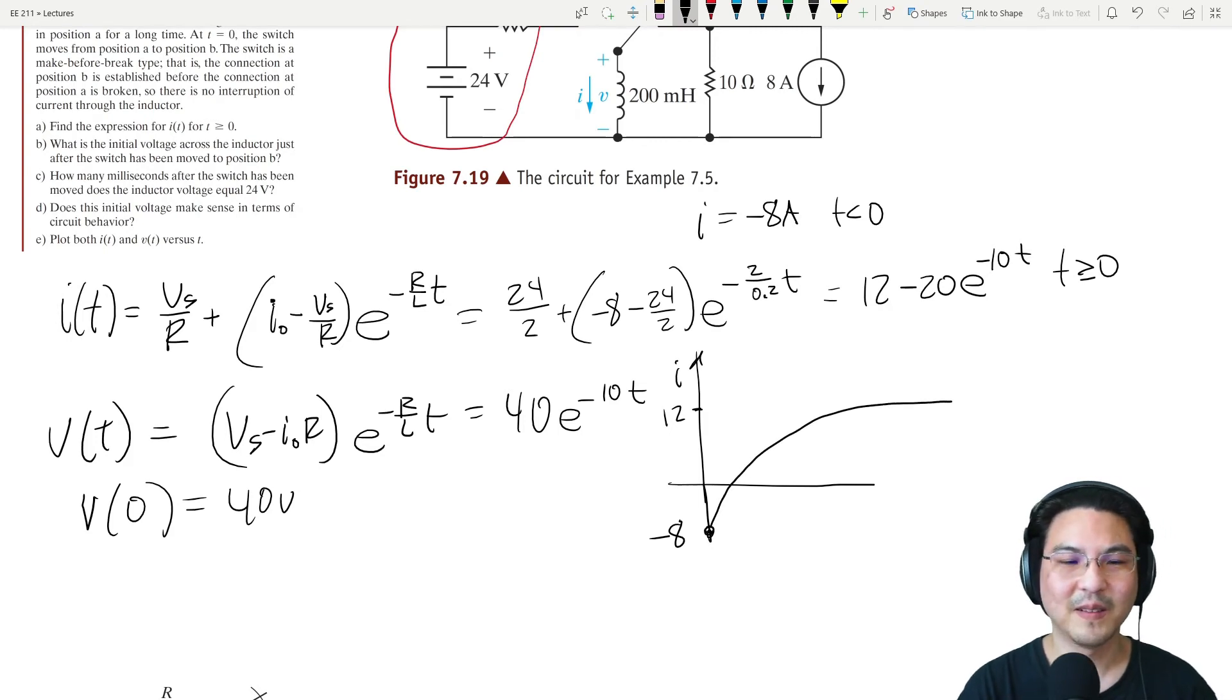That's current. And then the voltage is right here, so the voltage at t equal to zero starts up at 40 and then just exponential decay like this. There we go.